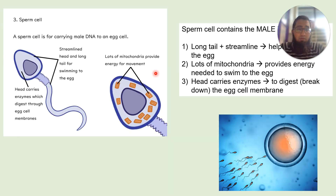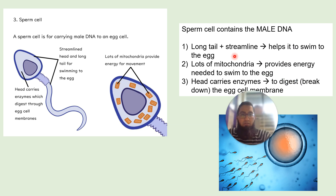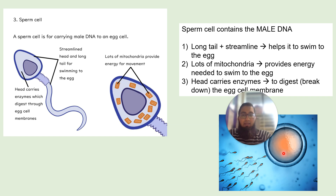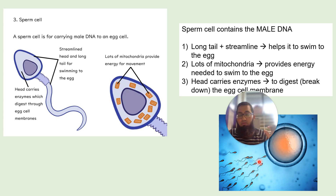Our first cell is the sperm cell. A sperm cell is used to fertilize an egg and contains the male DNA. The sperm cell is streamlined and has a long tail — both of these help it swim to fertilize the egg. Sperm cells also have lots of mitochondria to provide energy for swimming, as movement requires energy produced through respiration in the mitochondria.